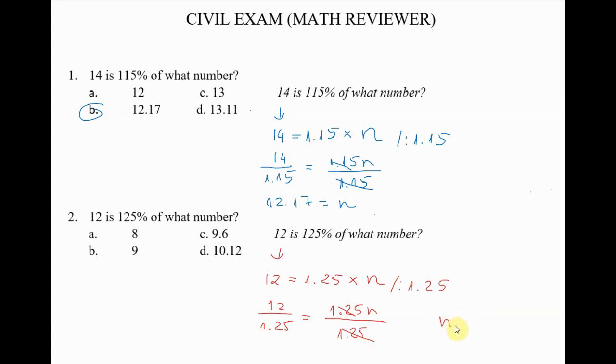And we have n is equal to 1.25, so I will write it down again: 12 divided by 1.25, and n is equal to 9.6. So C is the answer here.